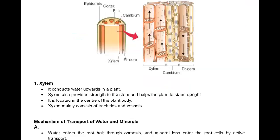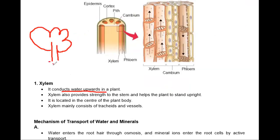Let's start with xylem. Xylem conducts water upwards in plants. There is a tree — it takes water in the upward direction because water and minerals are present in the soil. Xylem also provides strength to the stem and helps the plant to stand upright. It is located in the center of the plant body.